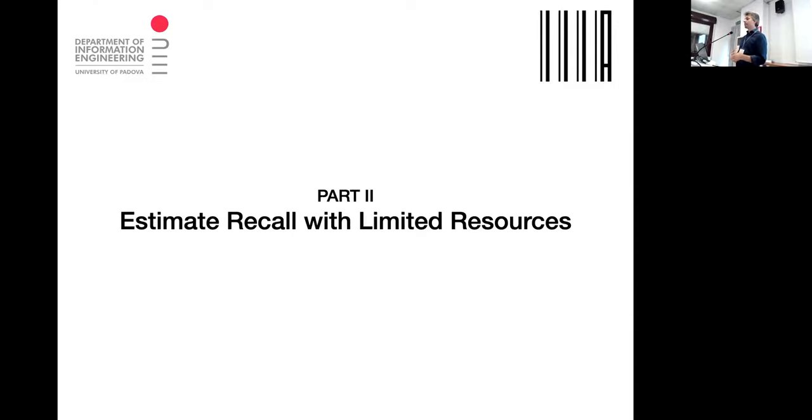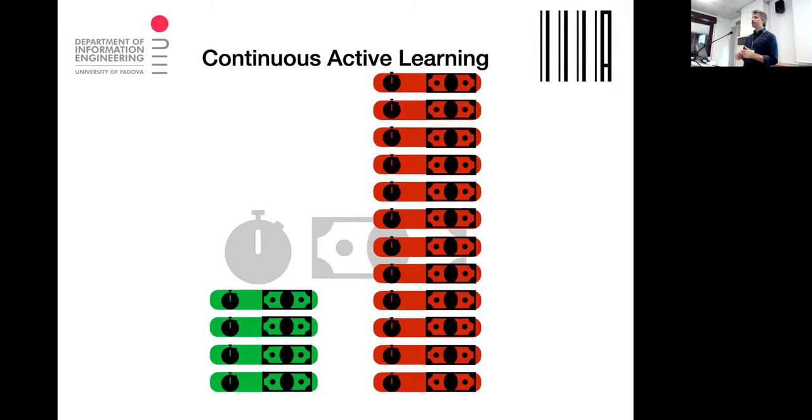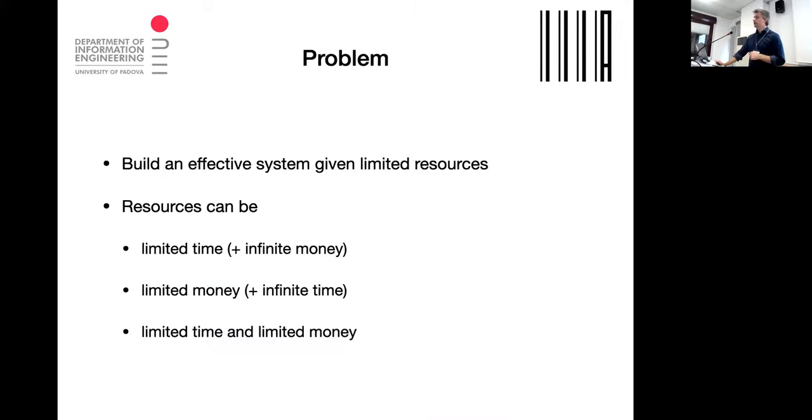The second part is about estimating recall with limited resources — the difficult part. Limited resources means time and money. If you have a limited amount of time to read documents or finish the task, you must take into account that you don't always have unlimited resources. Every time you judge something, you should consider that you may run out of money or time needed to assess the collection.